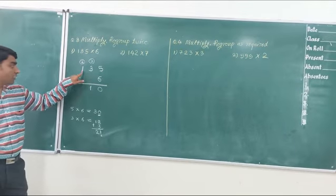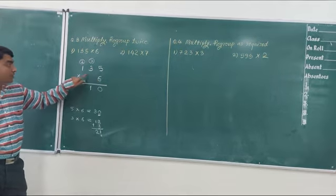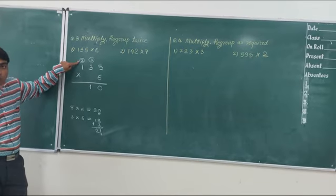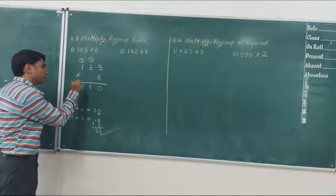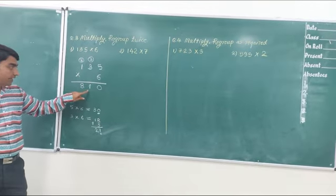Now let's multiply 1 by 6. 6 ones is 6, plus 2. 6 plus 2 is 8. So the answer is 810.